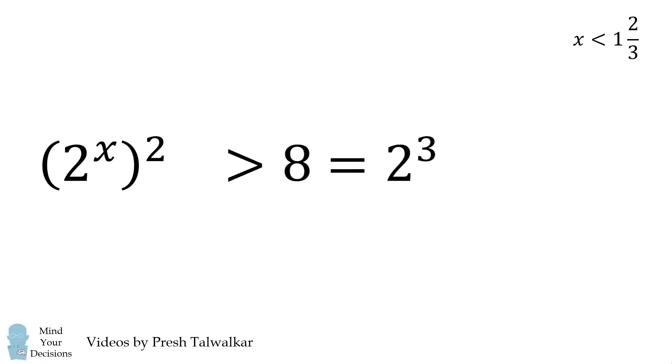This means 2^x raised to the power of 2 is greater than 2^3, which then means 2^(2x) is greater than 2^3. So then 2x is greater than 3.